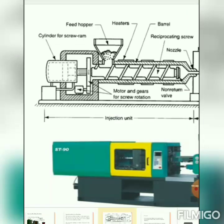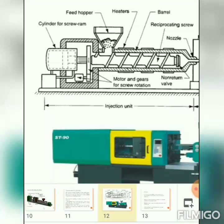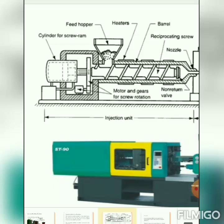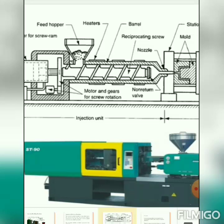Let's see the injection unit and its different components in detail. The feed hopper is used for feeding the raw material into the machine. The raw material for molding is preheated to remove moisture before feeding. The heating cylinder consists of a ram screw used to force the molten or plasticized material into the mold, operated by hydraulic machine or cylinder. Heating coils or heaters surround the cylinder to melt the raw material.